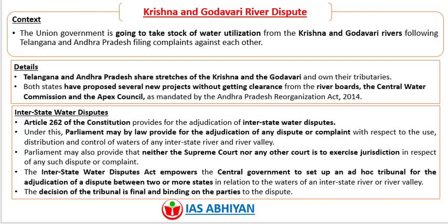The next article is on the Krishna and Godavari River dispute. Recently, the Union Government is going to take stock of water utilization from the Krishna and Godavari rivers, following Telangana and Andhra Pradesh filing complaints against each other. Both states share stretches of the Krishna and Godavari and their tributaries. Both states have proposed several new projects without getting clearance from the river boards, the Central Water Commission, and the Apex Council, as mandated by the Andhra Pradesh Reorganization Act of 2014.